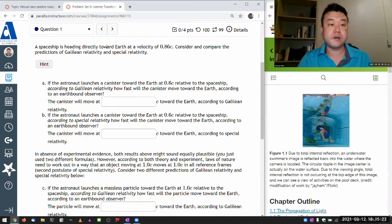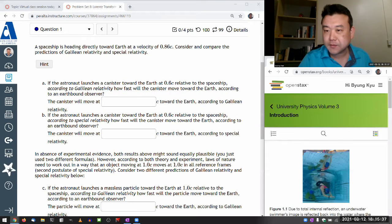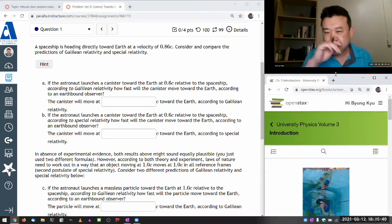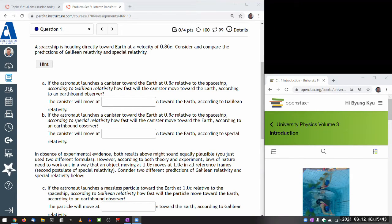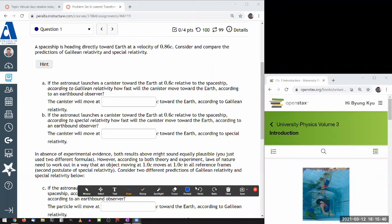So the question says a spaceship is heading directly toward Earth at a velocity of some speed. I need to start drawing stuff for my own benefit. I'll reserve a corner of this space for drawing stuff. In the black background, if I choose white pens in Zoom, it'll show. So I have Earth and here's a spaceship that's coming towards Earth. I don't know how to draw a spaceship. It's my spaceship. It's coming towards Earth at the speed of 0.86c. That seems pretty high.